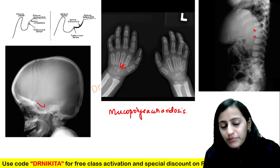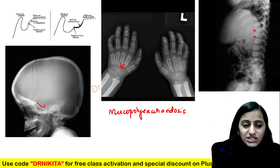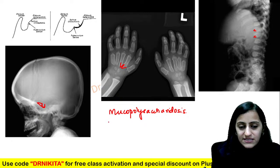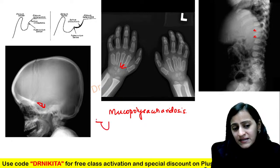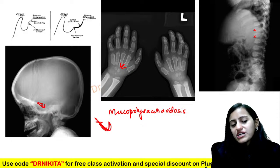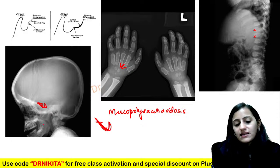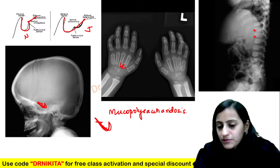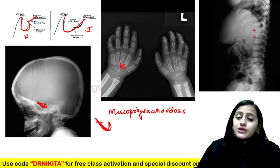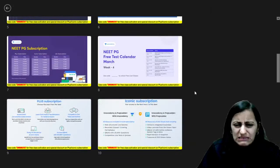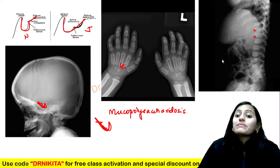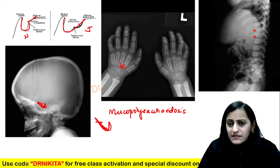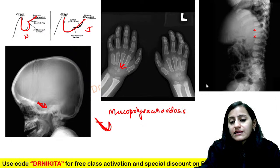In the J-shaped sella, normally the sella is shaped normally, but this part becomes flat, giving a J or reverse J shape. Bullet vertebra refers to anterior beaking. In mucopolysaccharidosis — specifically Hurler's — you have antero-inferior beaking. In Morquio's, you have central/middle beaking.